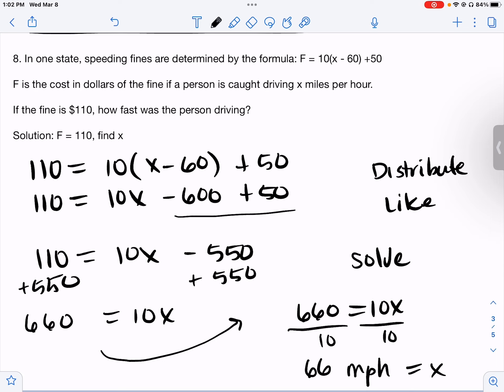Now we can get x by itself. Add 550 to both sides, so we get 660 on the left. On the right, minus and plus cancels. Now 10x means multiply, so we're going to divide by 10. We get 66 equals x, and so that's our speed, which is 66 miles per hour.